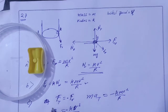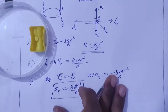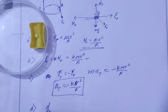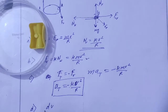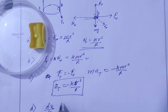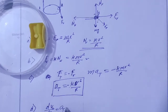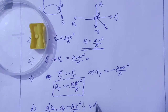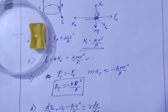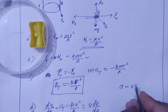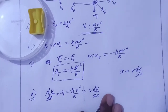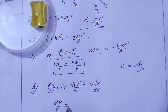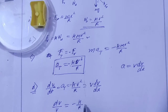Part D: integrate the tangential acceleration to obtain the speed. We use dv/dt = v dv/ds (tangential acceleration formula). So: −mu·v²/r = v dv/ds. One factor of v cancels, giving dv/v = −(mu/r) ds.